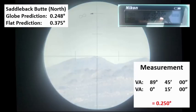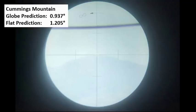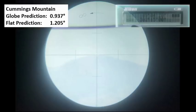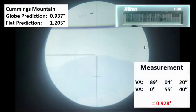So the third mountain I looked at was called Cummings Mountain off to the northwest. So the globe prediction 0.937 degrees. Flat earth prediction 1.205 degrees. Here is the actual measurement. And it works out to be 0.928 degrees. So very, very close to our globe prediction and a very, very long way from our flat earth prediction.